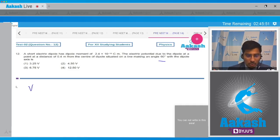The potential due to a dipole at a general point is given as P cos theta by 4 pi epsilon 0 r square. Herein all the values are given: P to be equal to 2.4 into 10 raised to power minus 10, theta is given as 60 degree, 4 pi epsilon 0 is something that we know, that is 9 into 10 raised to power 9, and r is given to be equal to 0.4 meters.